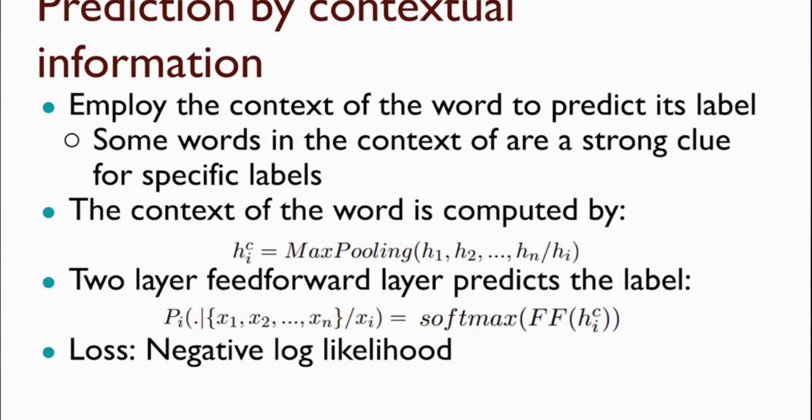The second subtask in our multi-task setting is prediction of the word label using only its context. This prediction encourages the model to encode information about the labels of other words in word representations, which is helpful because the true label of a word may depend on other words. For instance, if we have the word 'album' in a sentence that also has the word 'play,' it will be easier to find the label for 'play.' We compute context representations via max pooling over all words excluding the word itself, then predict the word label from this context using a feed-forward classifier with negative log-likelihood as the loss.